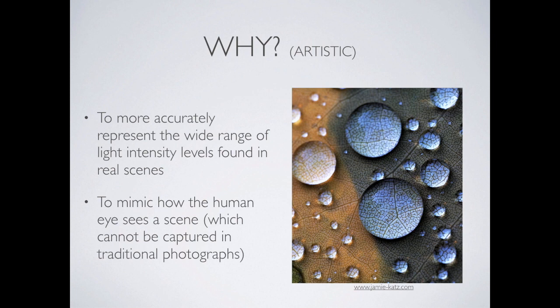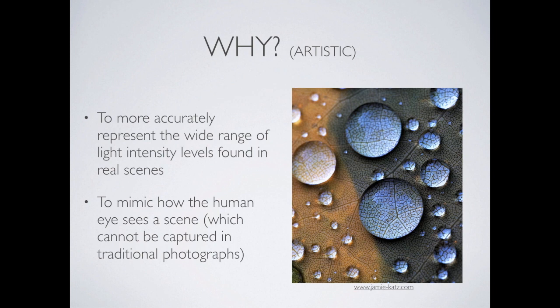When we take a single photograph, that image is captured forever at a particular exposure. We can't go back and dynamically change what we're seeing — it's printed, it's still. So when we talk about high dynamic range, what we're trying to do is mimic the way we see the world. It's not static, it's moving. We're going to combine those images together, representing a large variety of light values in a single image.